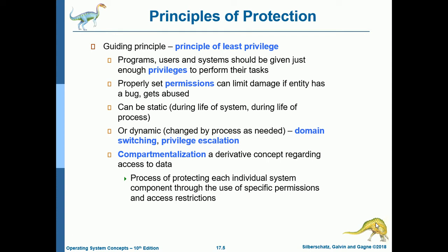Properly set permissions can limit damage if an entity has a bug or gets abused. This can be static during the life of the system or process, or it can be dynamic — changed by the process as needed — by means of domain switching and privilege escalation. For example, if you have a guest account and want to be an administrator, you need the username and password of the administrator to gain full control to modify and access the system.